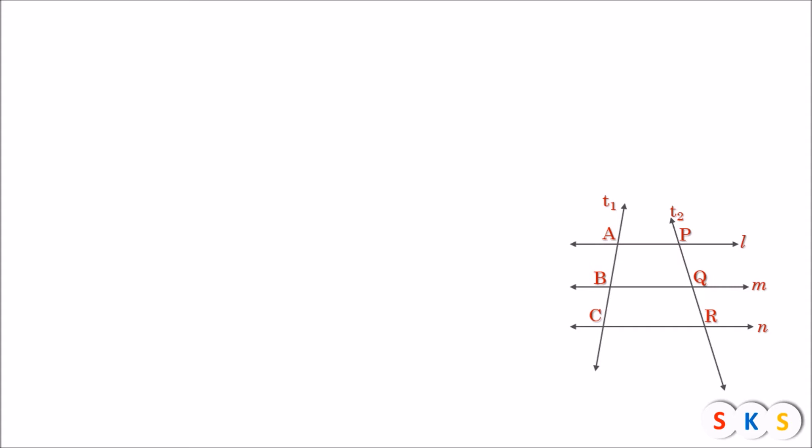First we will try to understand what is an intercept. An intercept is a segment which is formed on a transversal by two parallel lines. Seg AB is the intercept formed on transversal T1 by the two parallel lines L and M. Seg BC is another intercept formed on transversal T1 by the two parallel lines M and N. Similarly, Seg PQ and Seg QR are the intercepts formed on transversal T2.